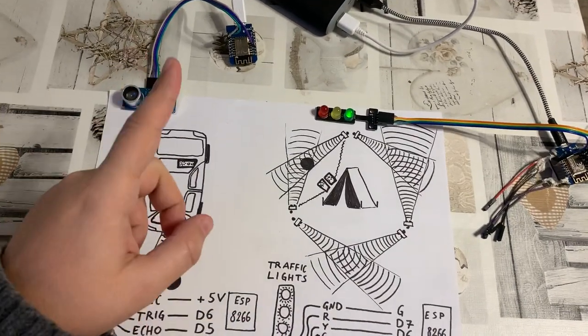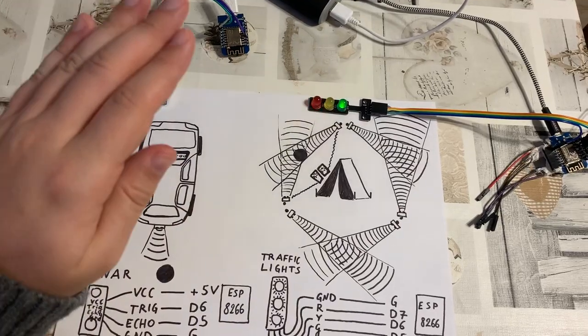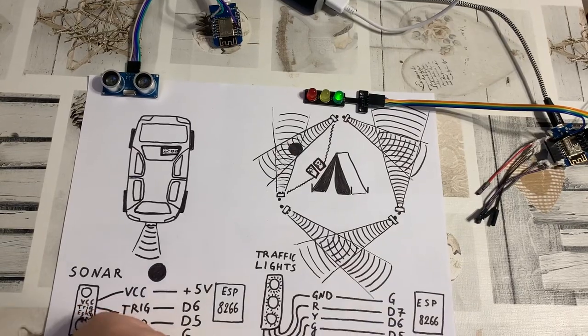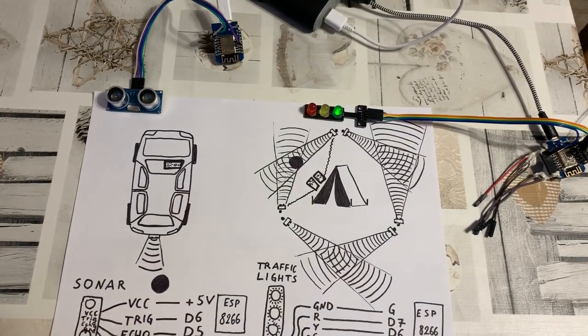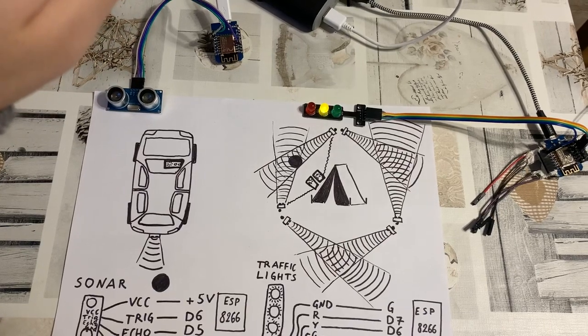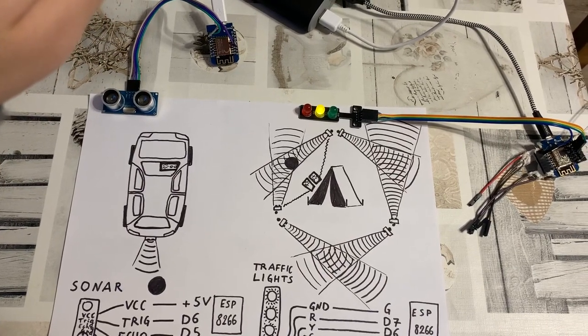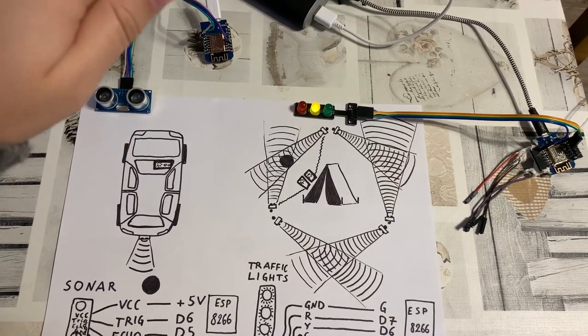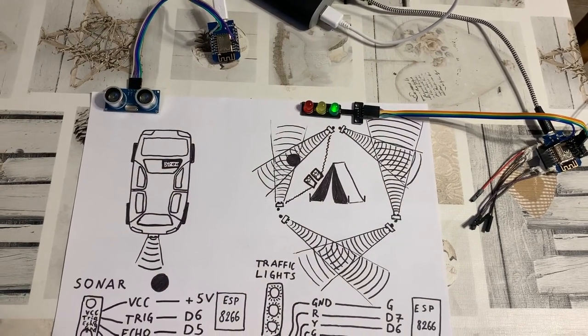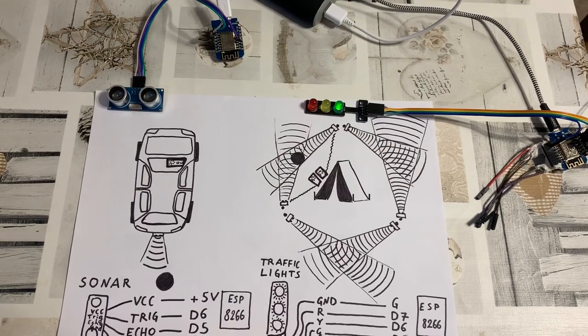One ESP module is connected to a sonar sensor and the other ESP module is connected to a traffic lights module. If something comes close to the sonar sensor, the other module will receive a corresponding signal and light the traffic lights corresponding to how close an object has been detected.